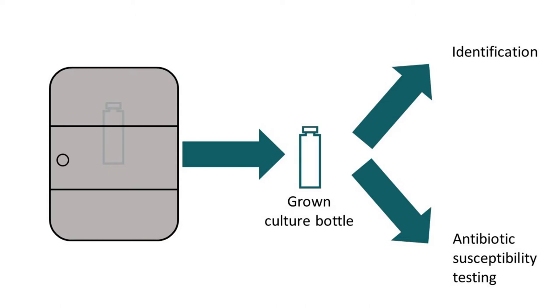Blood culture bottles with signs of growth are taken out of the incubator and are processed over the following days to identify the bacteria present. In parallel, the antibiotic susceptibility of the bacteria is determined.